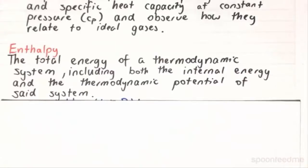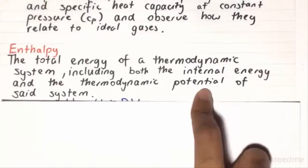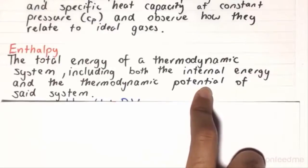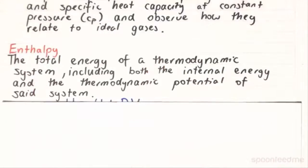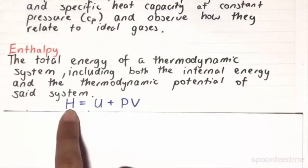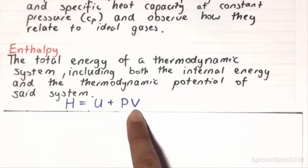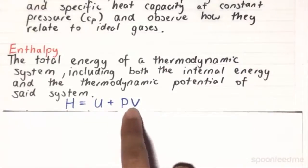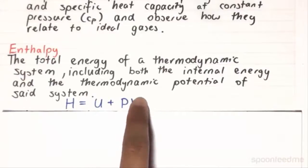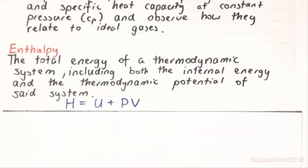So now, if we refer back to the internal energy definition that we had, it was somewhat similar to this, except that the internal energy does not include this potential. This potential added onto the internal energy is essentially what the enthalpy is. So this is quantified by the equation H is equal to U plus PV, where U is the internal energy, and the PV is the thermodynamic potential of this system.